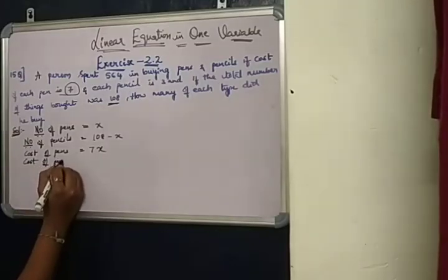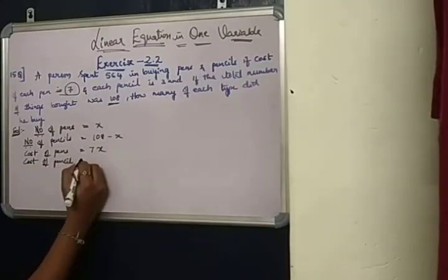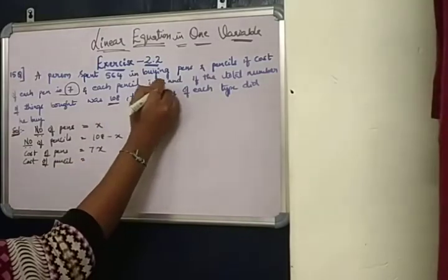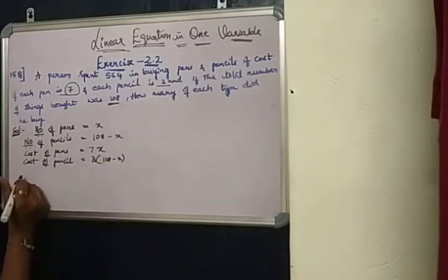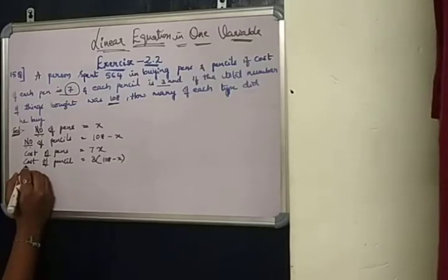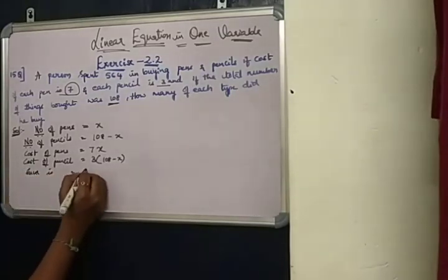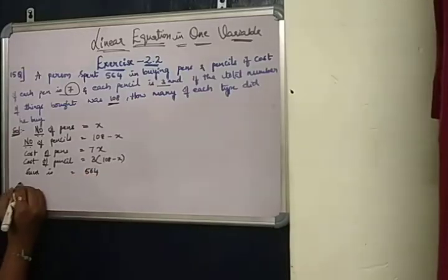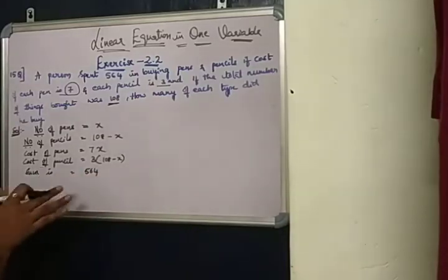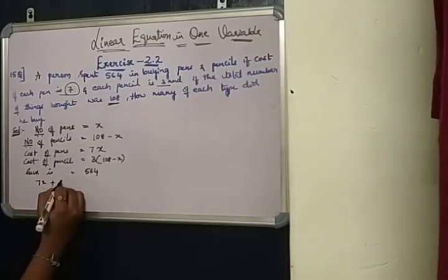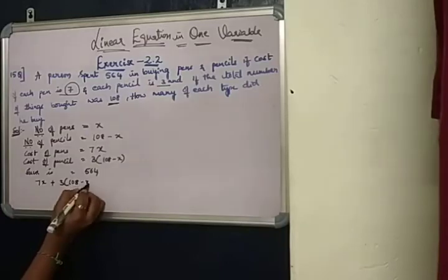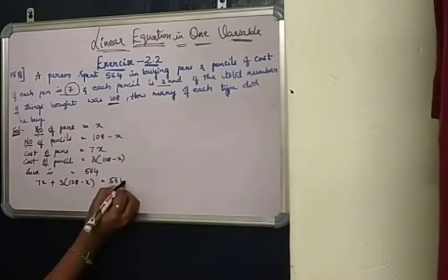3 into 108 minus x, and the total sum is 564. Therefore, the sum of pens plus pencils: 7x plus 3 into 108 minus x equals 564.